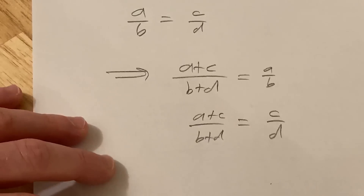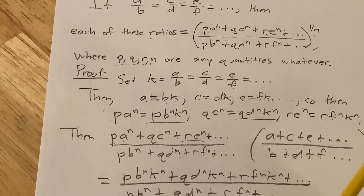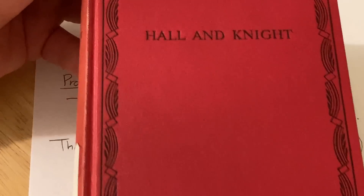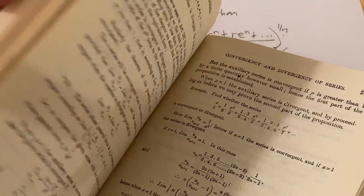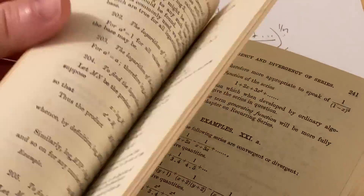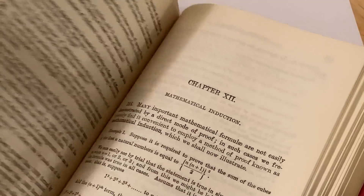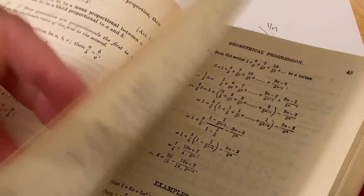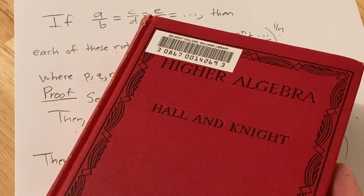So yeah, kind of cool. I hope this video has been helpful. The book this is from is Hall and Knight — it's called Higher Algebra. It's a pretty cool book with all kinds of really challenging problems, and it's really inexpensive. I'll try to leave a link in the description. Good luck, take care.